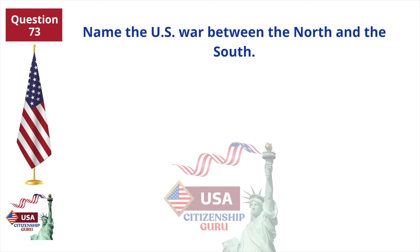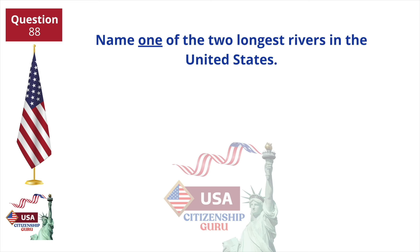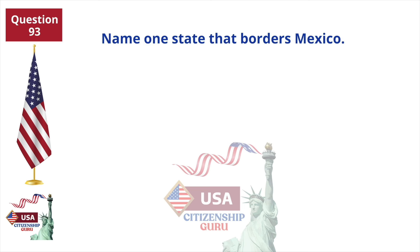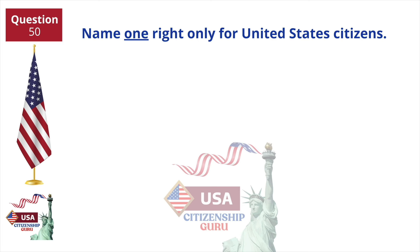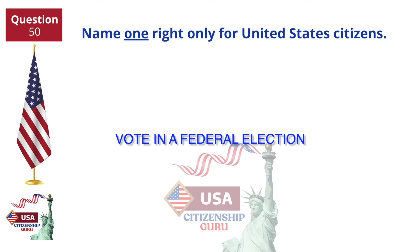Name the U.S. war between the North and the South. The Civil War. Name one of the two longest rivers in the United States. Missouri River. Name one state that borders Mexico. Arizona. Name one right only for United States citizens. Vote in a federal election.